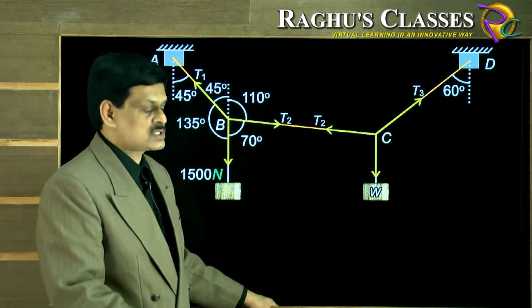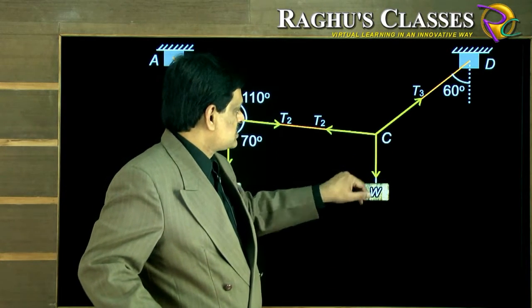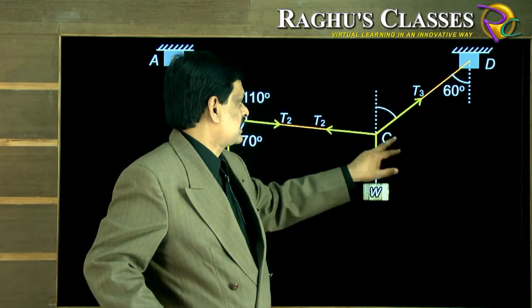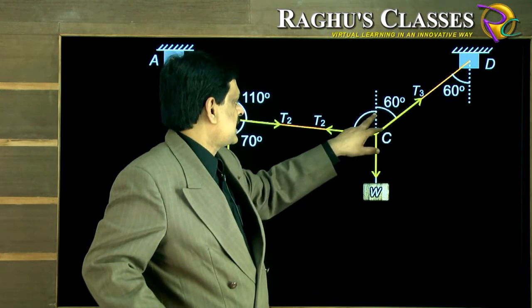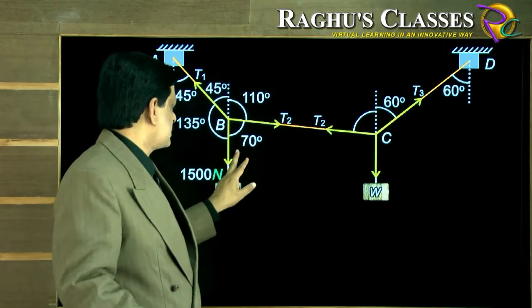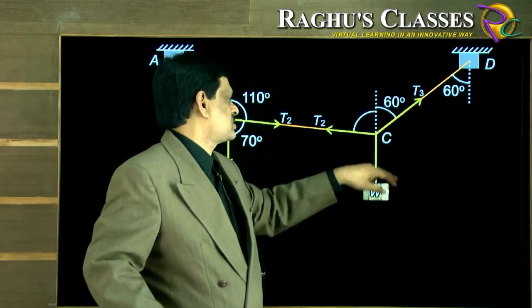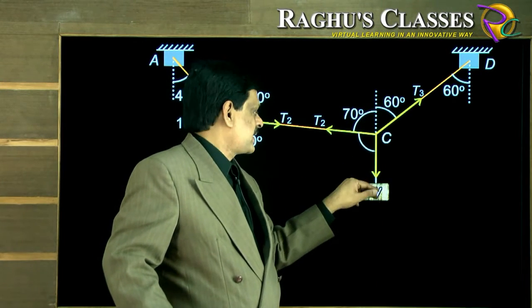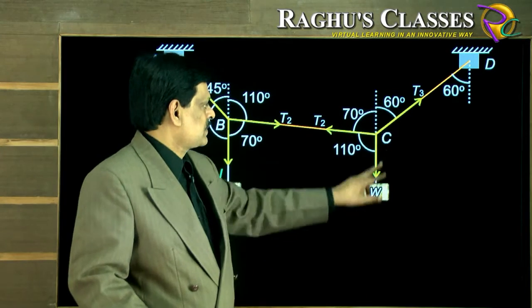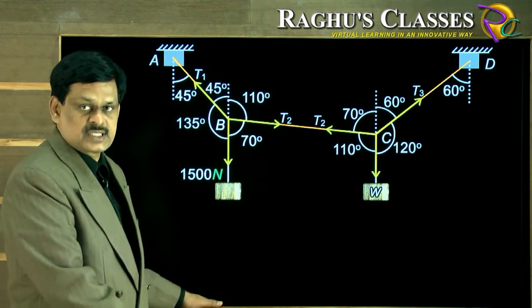So these are again three forces keeping the particle in equilibrium. So let us represent the angles here. If you extend this line here, this angle is 60, so this is going to be 60. And this is 70, means this angle also is going to be 70. Total is 180, out of which 70, so remaining angle is 110. This is 60, so remaining angle is 120. So we know all the angles at the two junctions.